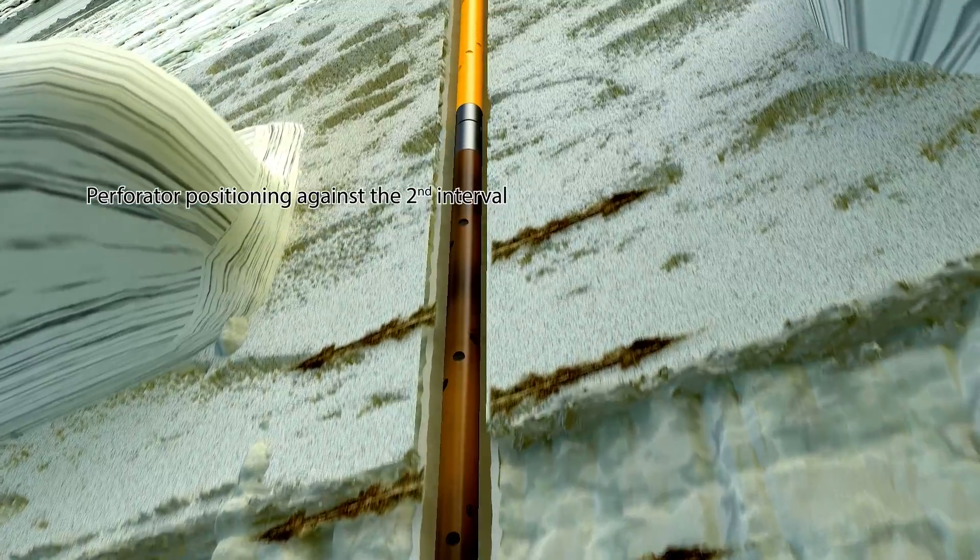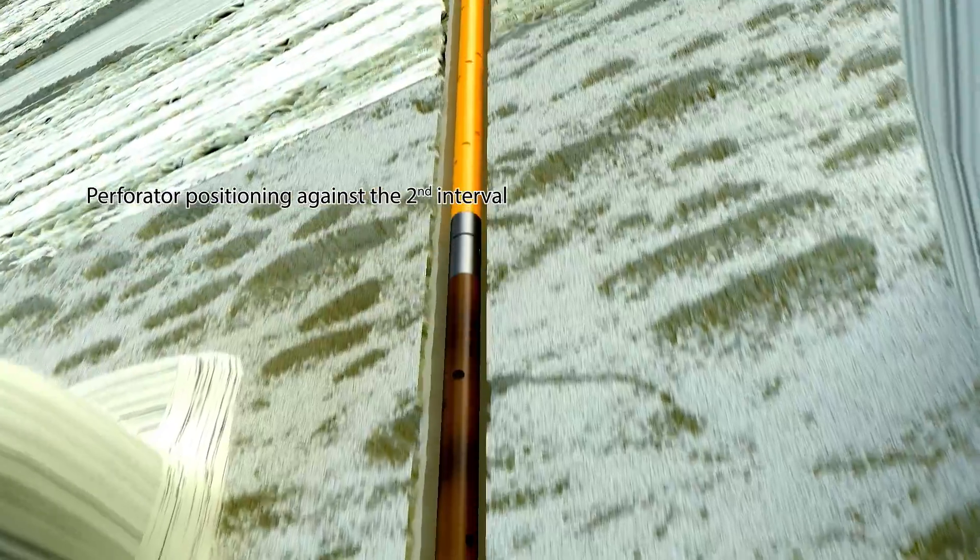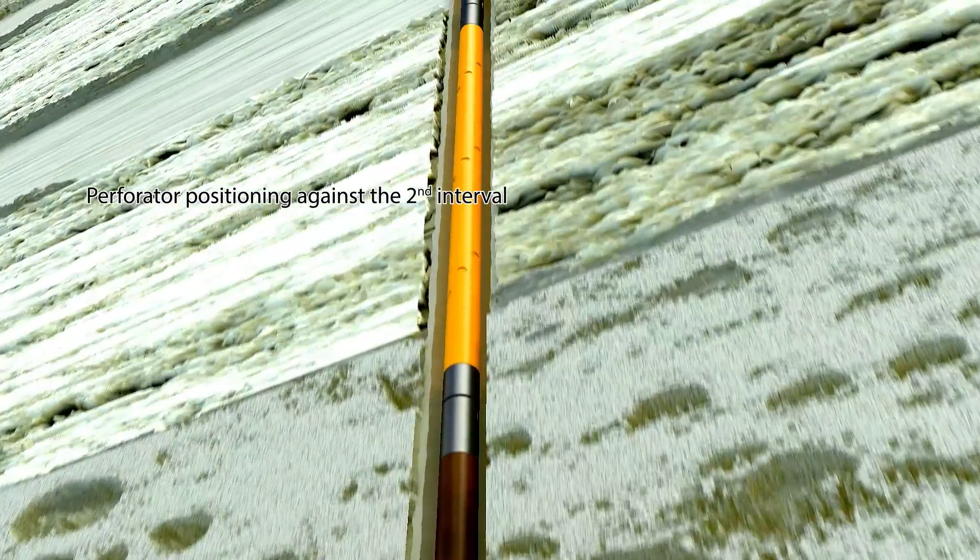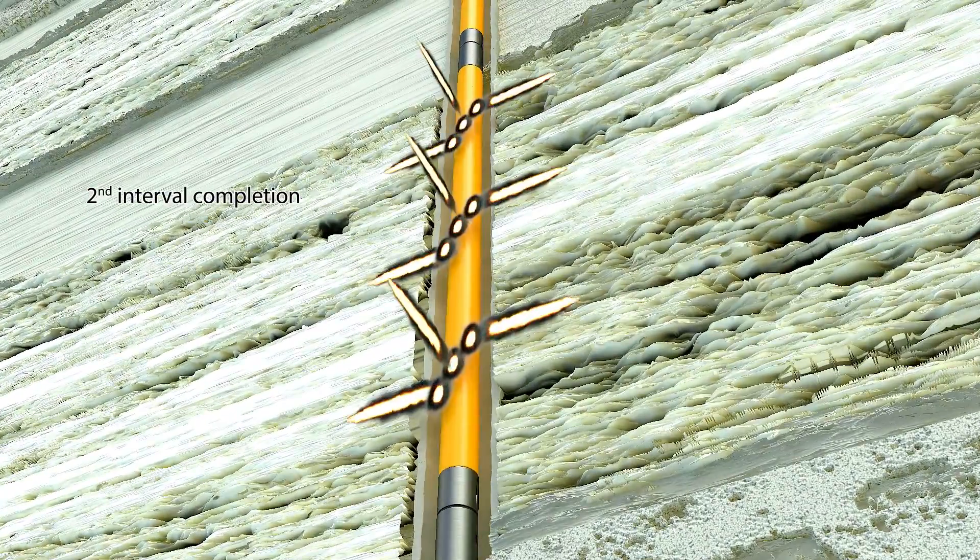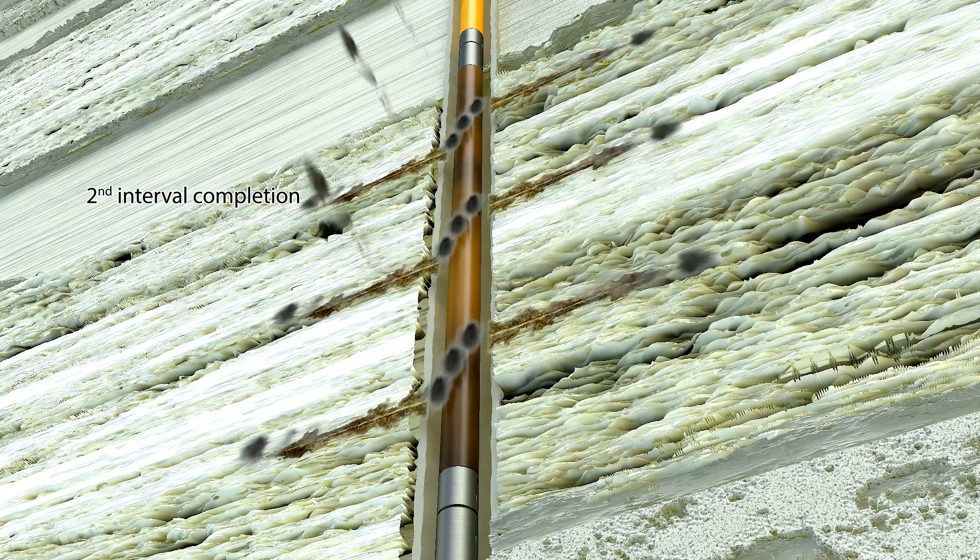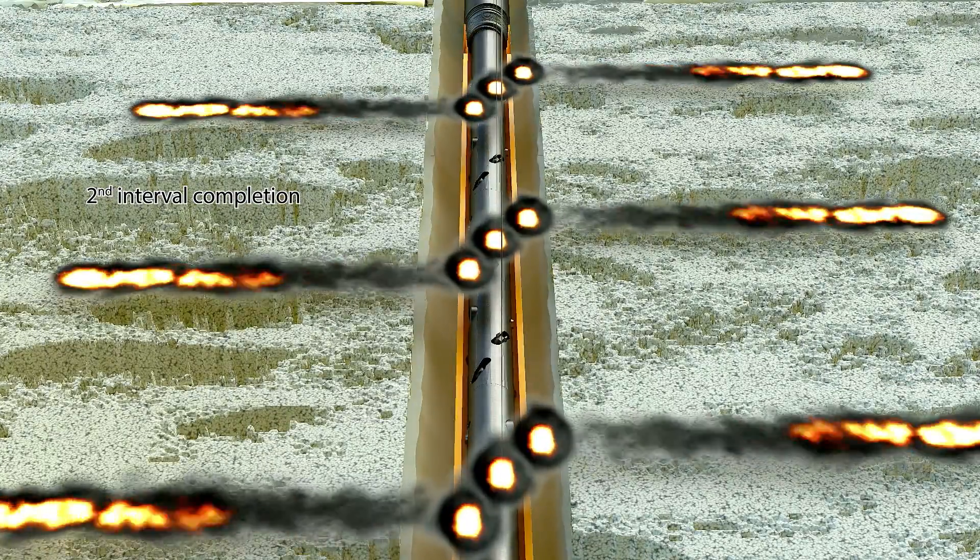On the next stage, the second perforator is positioned against the second upper perforation interval according to the data of a geophysical tool. The ignition of the second perforator is made by electrical impulse from the KU1 switching system.